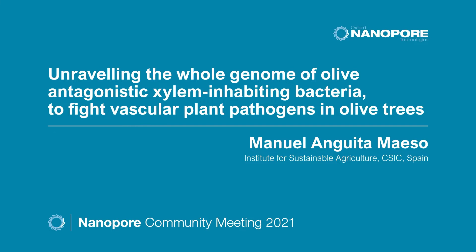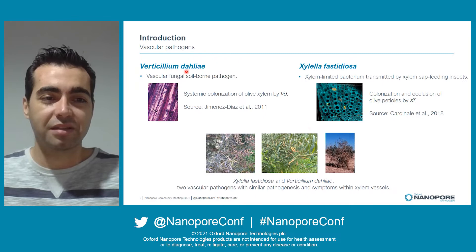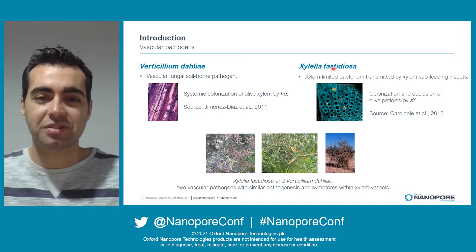First, I'm going to give you a brief introduction. Today, there are two vascular pathogens that are threatening olive crops worldwide. One of them is Verticillium dahliae, which is a fungal soil-borne pathogen, and the other is the xylem-limited bacterium Xylella fastidiosa, which is transmitted by xylem sap-feeding insects.